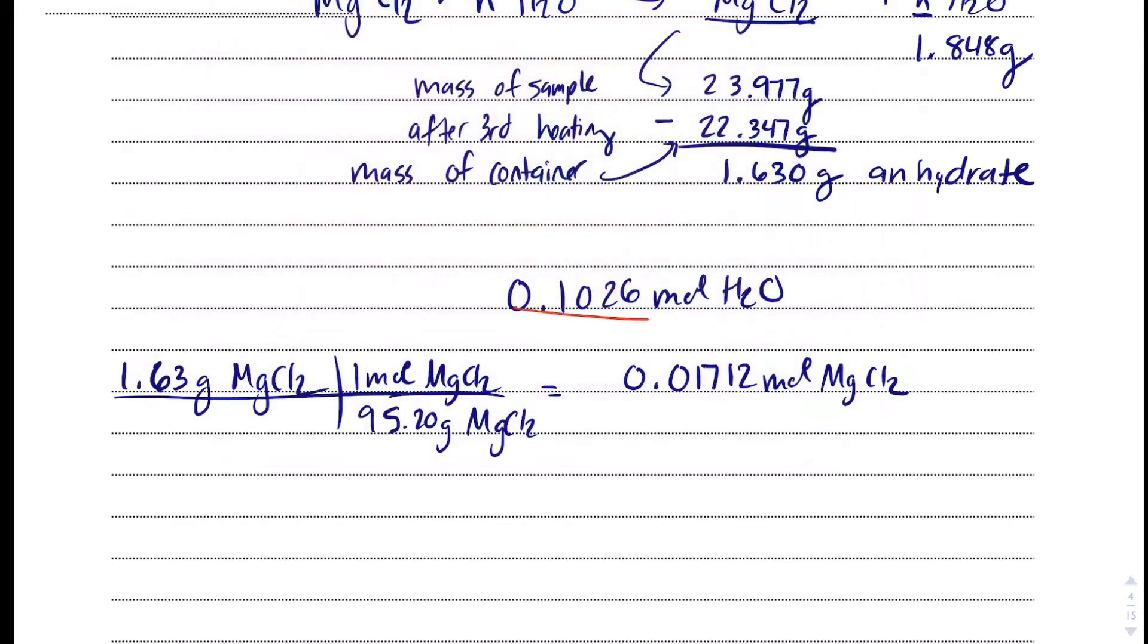Now, we can divide by small. We always expect the anhydrate to be small, so divide by 0.01712, 0.01712, and we're going to get 1 magnesium chloride, and we never expect to multiply to a whole. We always expect a pretty much a whole number. I get 5.992, which is essentially 6. So, after all that work, the answer for this one, B Part 2, is magnesium chloride, and this would be called hexahydrate, so 6H2O.